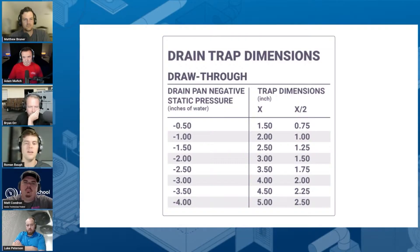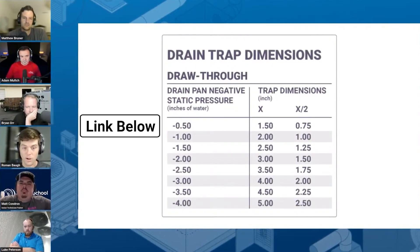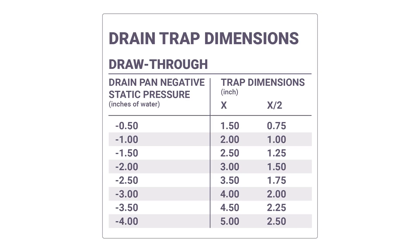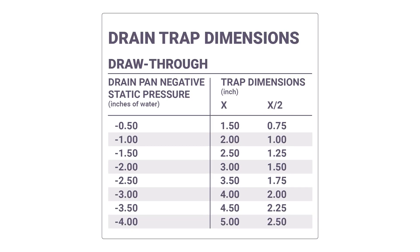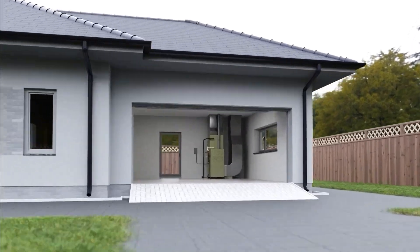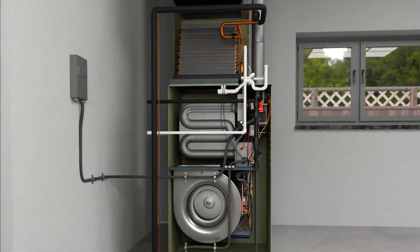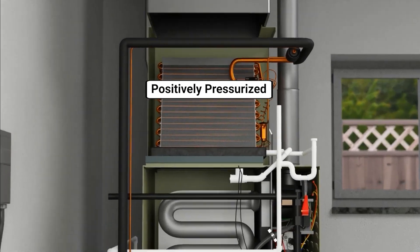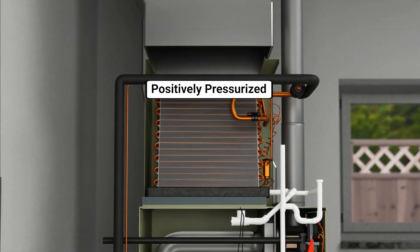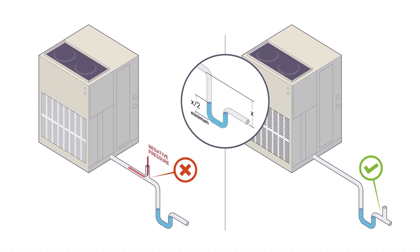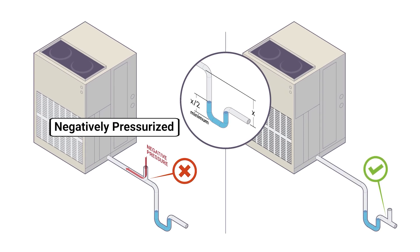Steven brings up a really good point — this idea of trap depth and its relationship to static pressure in negatively pressurized systems. To be clear, we're not talking about gas furnaces or systems where the evaporator coil is over the blower — those are positively pressurized and water wants to move out because the air is pushing it. We're talking about systems where we need to prevent air from pulling back into the drain line because it's negatively pressurized — typical for air handlers, pancake systems, and heat pumps where the evaporator coil is under the blower and therefore under negative pressure.